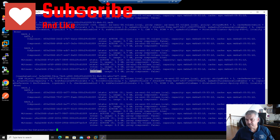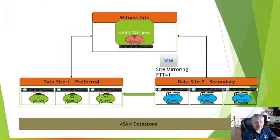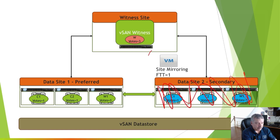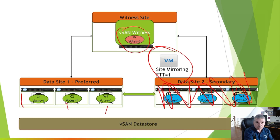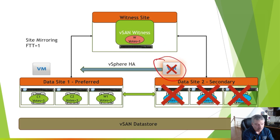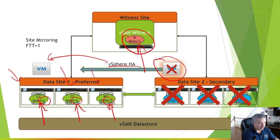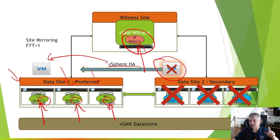Everything is fine. Now, what happens if I fail something? If I lose my whole site, technically speaking, this VM is no longer running — it's on that site — so HA has to kick in. But I still have one, two, three — six votes remaining. It will still work. If I fail that site, vSphere HA is going to kick in, and notice the votes are going to change. This is where adaptive quorum kicks in. Each component should get three, three, and three votes, and the witness over here will drop from three to one.